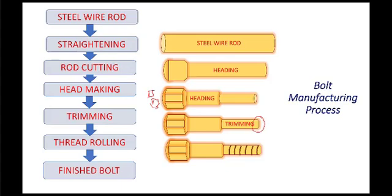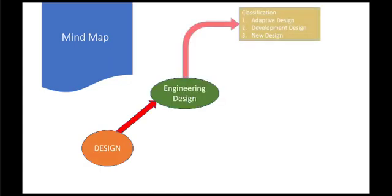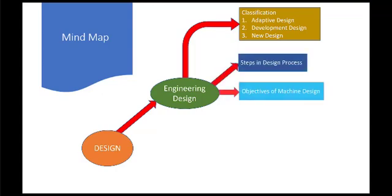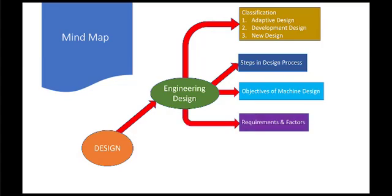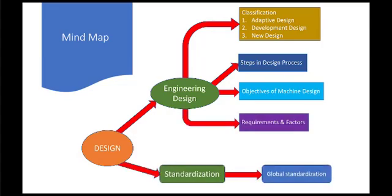This is the manufacturing steps. By keeping in the mind these steps, we need to design a new kind of bolt. These are the mind map. In design, engineering design, and we know about three types of design, steps in the design process, objectives of machine design, requirements and factors, standardization, and global standardization.